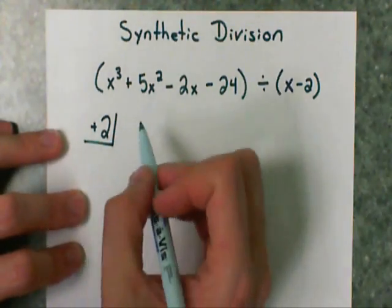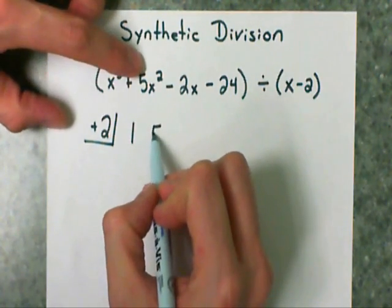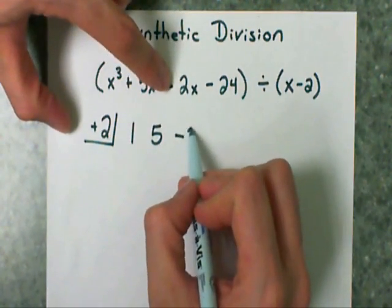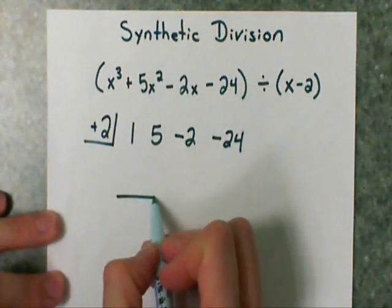Next, I'm going to write down all the coefficients. So when there's no coefficient, I know there's a 1, 5 on the x squared, negative 2, and negative 24. I'm going to skip a row, and then I'm going to draw a line.